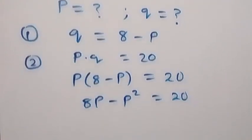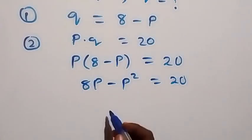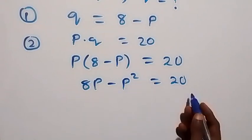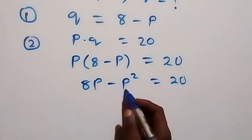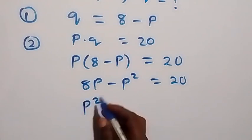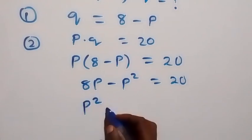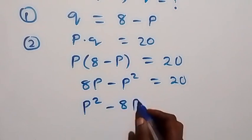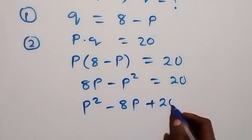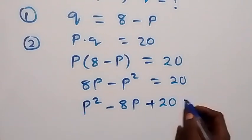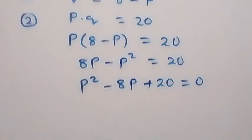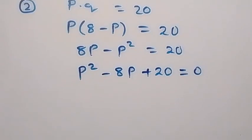Now we use this to form a quadratic equation. We take everything to one side: the minus p squared becomes p squared, the plus 8p becomes minus 8p, and we already have plus 20, leaving us with zero on the other side. So we have p squared minus 8p plus 20 equals 0.